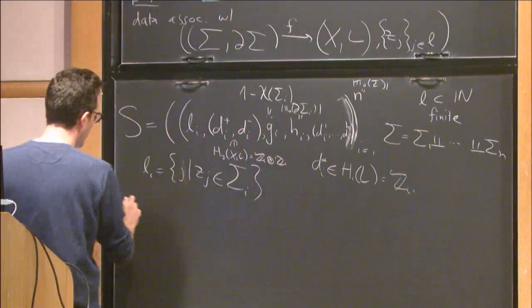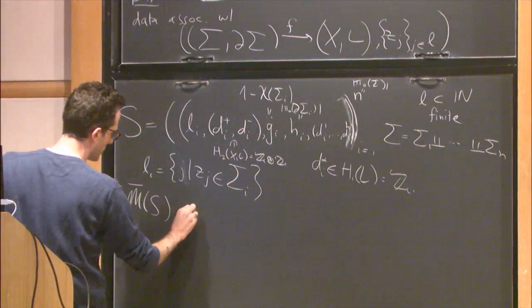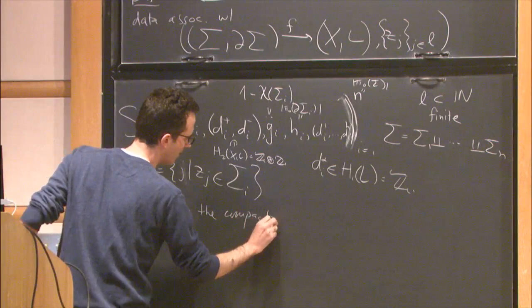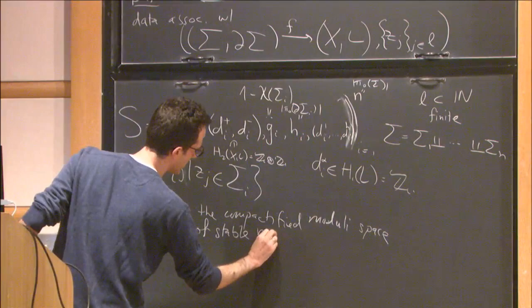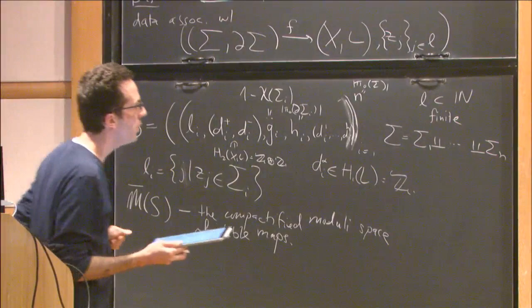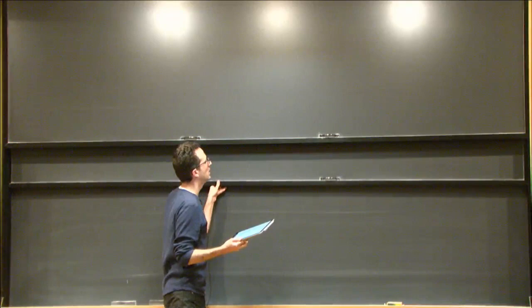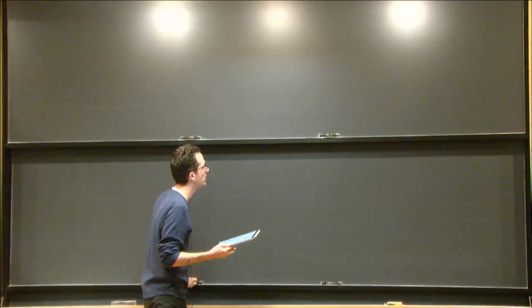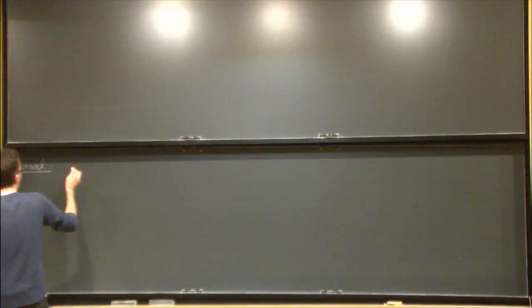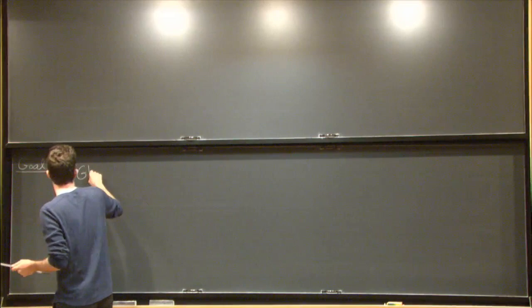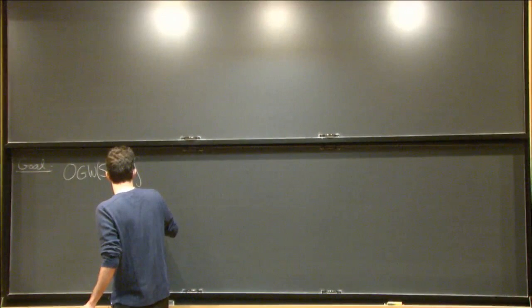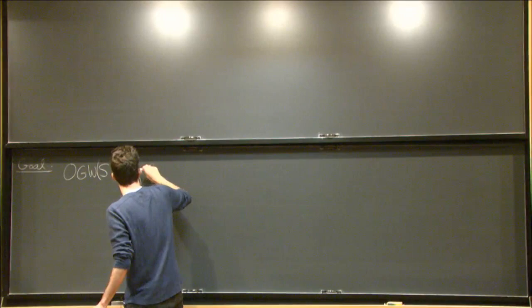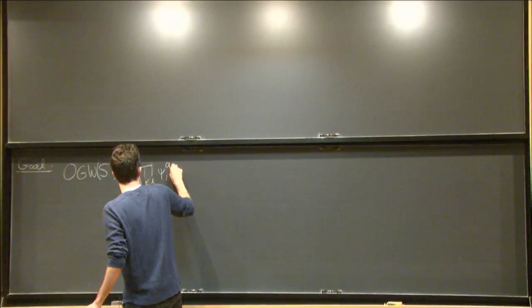Given this data, we can consider the compactified moduli space, denoted M-bar_S, the compactified moduli space of stable maps fitting that description. Our goal is to compute, or say something about, the open Gromov-Witten invariant associated with S, which by definition will be the integral over M-bar_S of the product over all j in L of psi_j^{a_j}, where a_j are some non-negative integers and epsilon_j is some value, either plus or minus one.